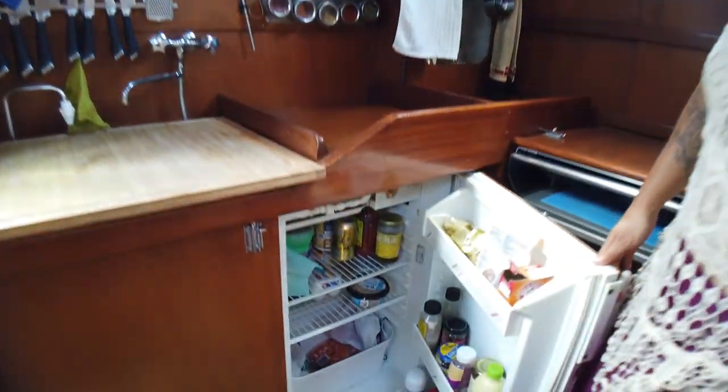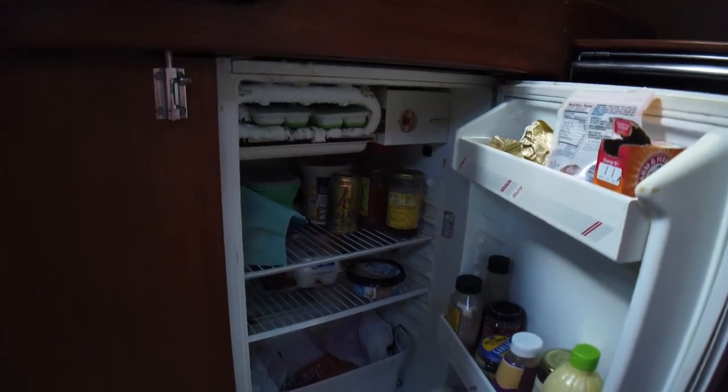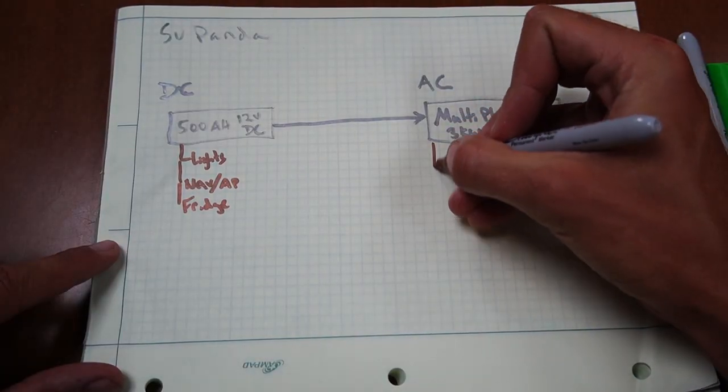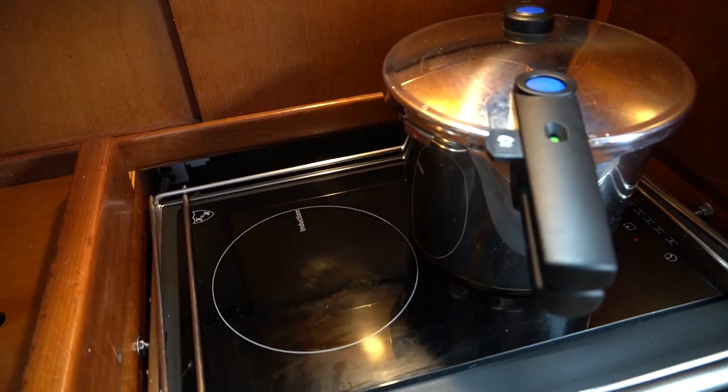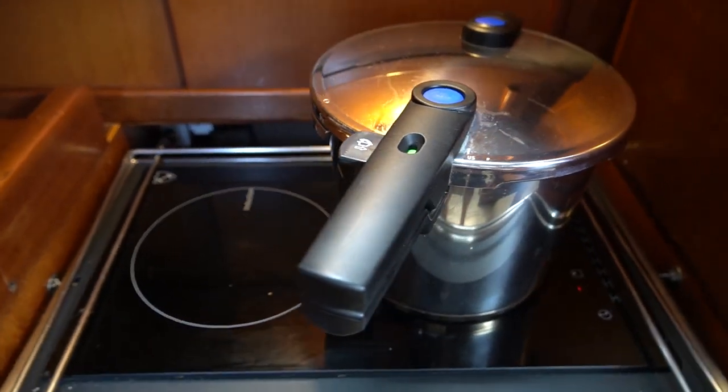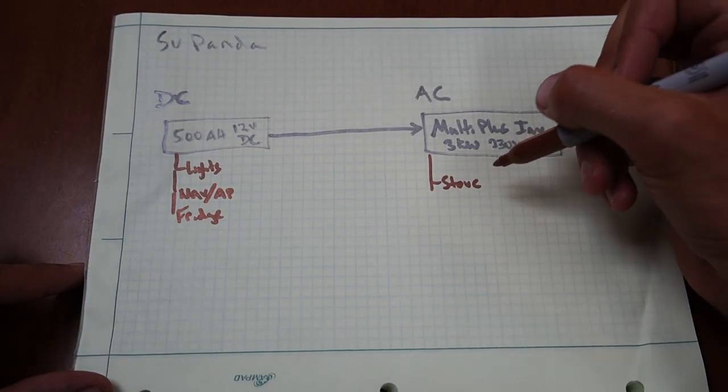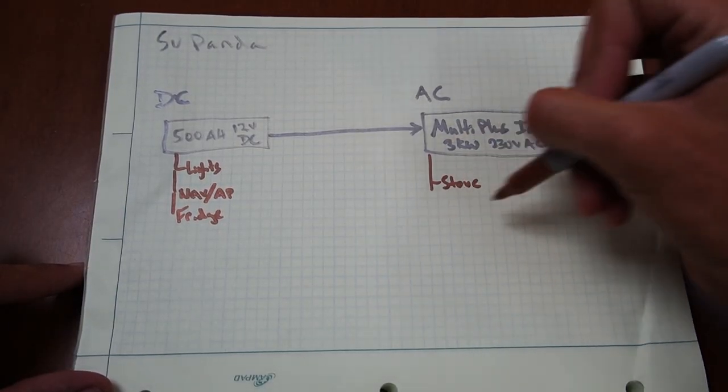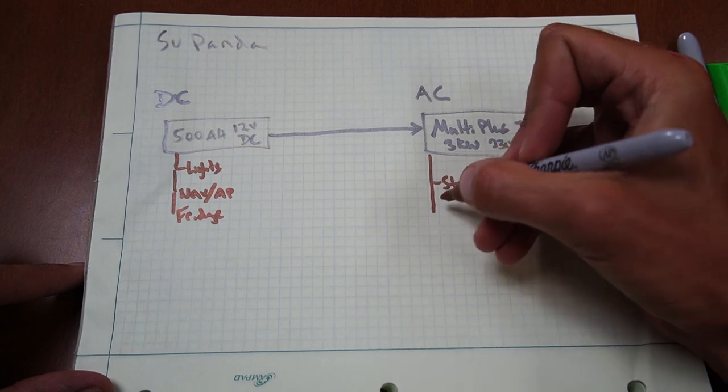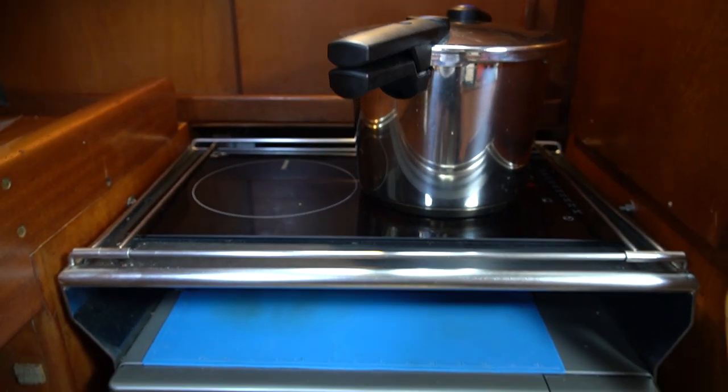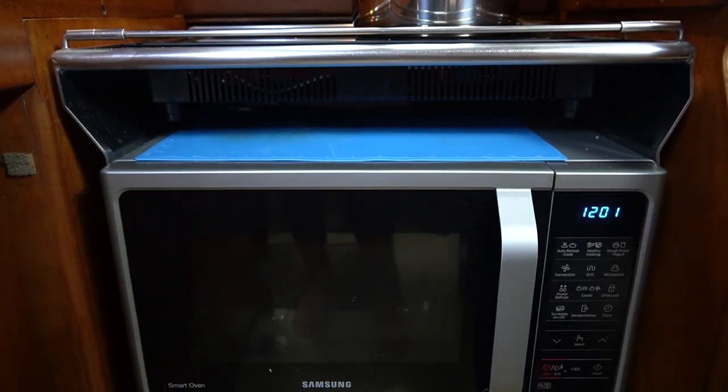Then we have other draws like our fridge. Probably our largest consistent draw would be the refrigerator box. And then on the AC side, some of the draws we have is our stove. That's our induction cooktop. And we're completely electric cooking here on Panda Boat. So we have a lot of draws here on the AC. So we have our stove and then our oven microwave combo.